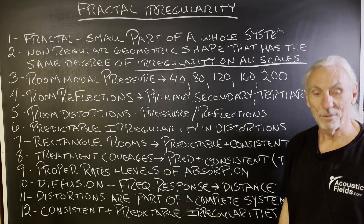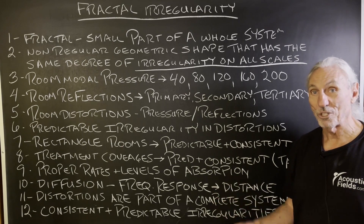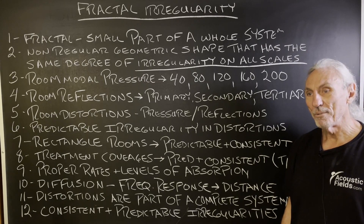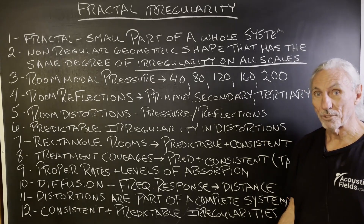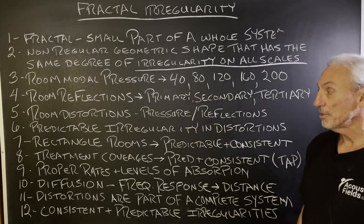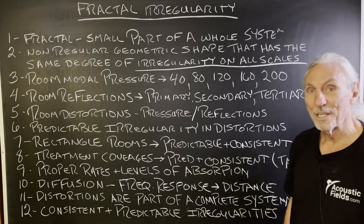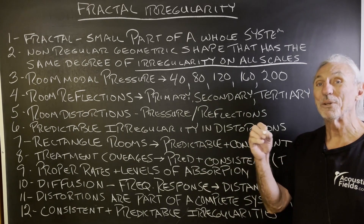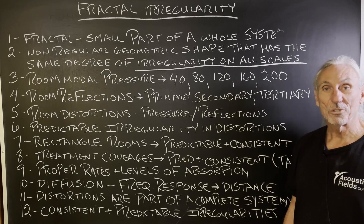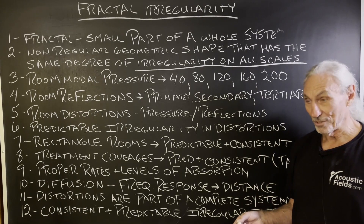Let's take a rectangular room as an example. People say they sound the best, and there have even been studies showing that. It would be interesting to see the design parameters of those studies. You could measure for distortion, but there's also a subjective component to listening and music. Rectangular rooms are predictable and consistent in their issues, their problems, their irregularities — because their walls are parallel and their dimensions are fixed. There's a lot of predictability and consistency, which is always welcome when treating those issues.